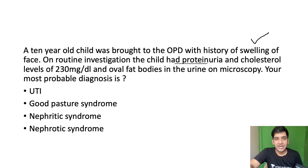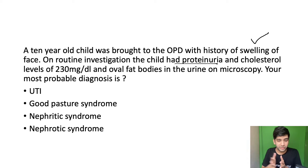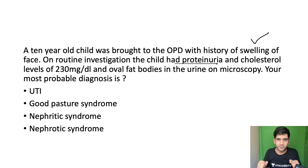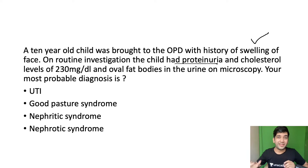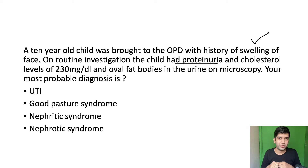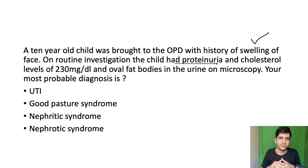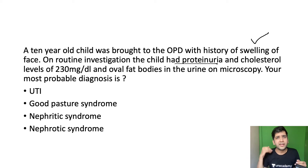On investigation, the child had proteinuria. Taking proteinuria step by step, my first possibility is renal-related proteinuria — but it's a wide spectrum since I don't have the exact amount or whether it's selective or non-selective. Selective proteinuria where albumin alone is lost points toward nephrotic syndrome, while non-selective proteinuria can occur in nephrotic syndrome, ATN, or any renal disease.